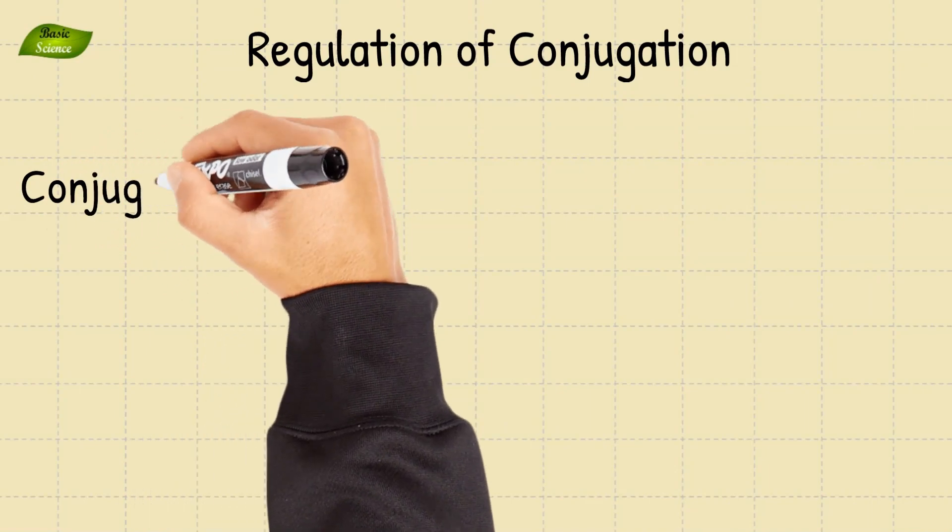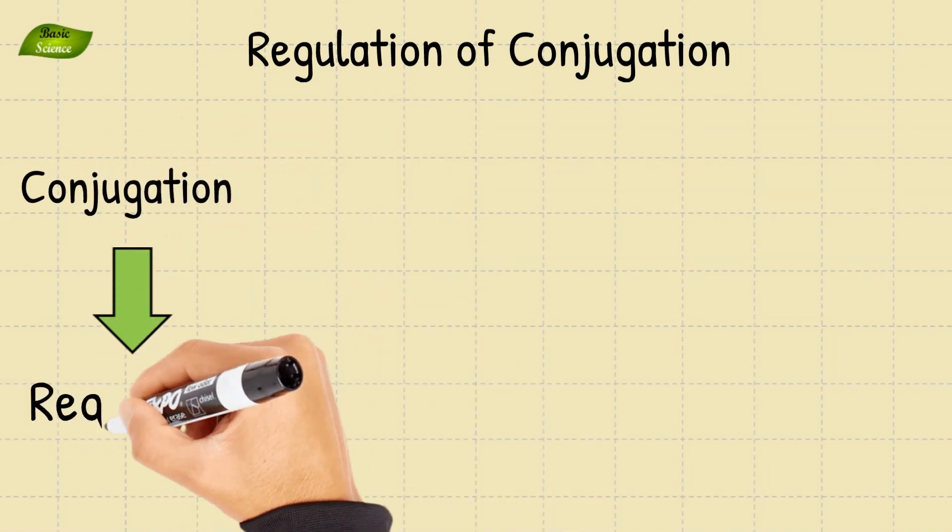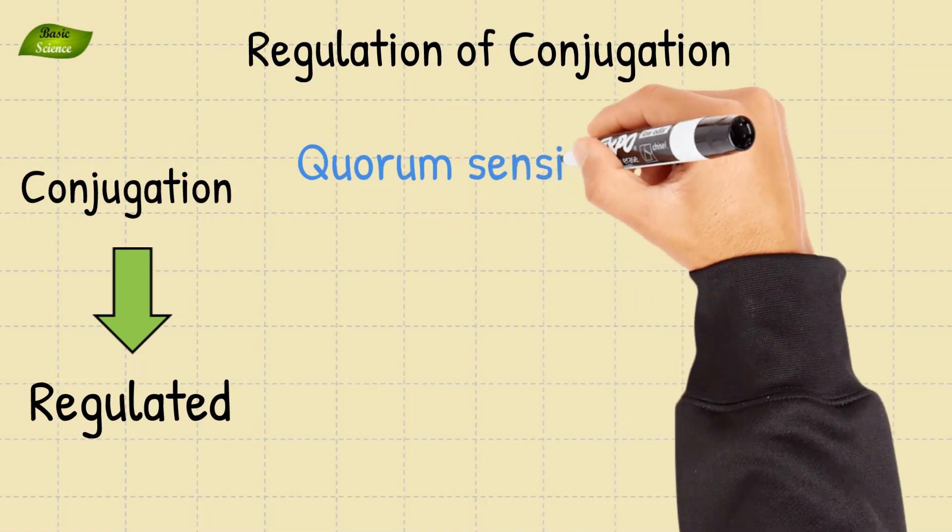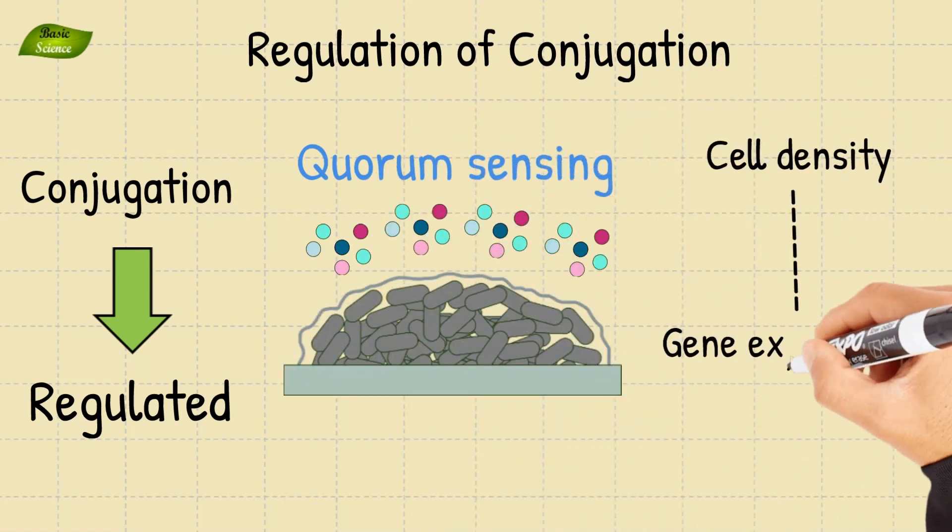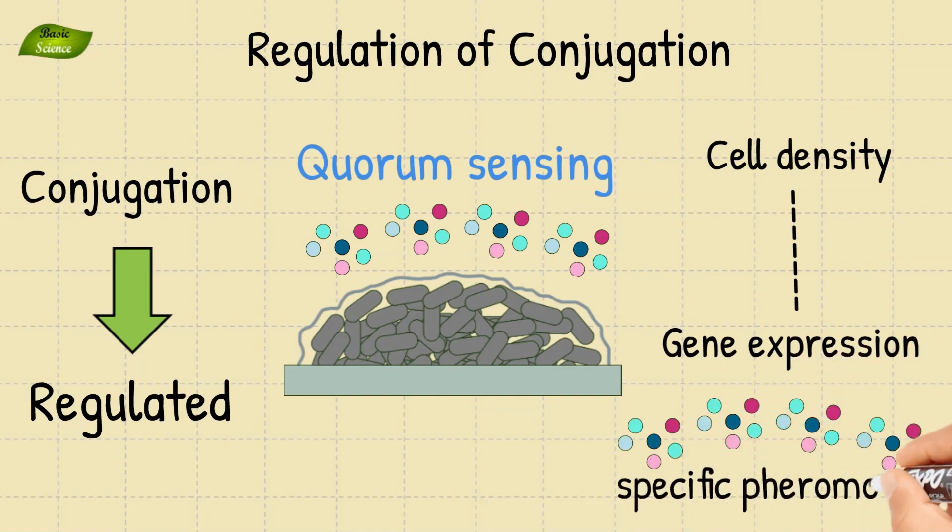Bacterial conjugation is tightly regulated by various factors, including quorum sensing, which allows bacteria to sense cell density and control gene expression accordingly, and the specific pheromones in some species.